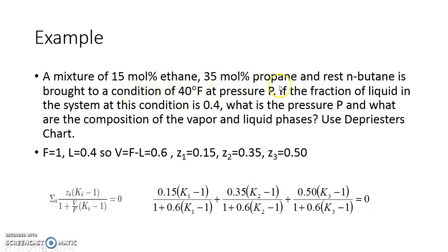If there would have been four component, we would have fourth term coming here which is Z4 into K4 minus 1 over 1 plus V K4 minus 1. Likewise, any number of component you can use this equation.